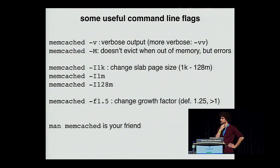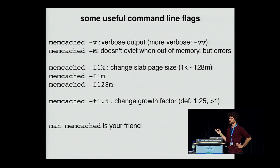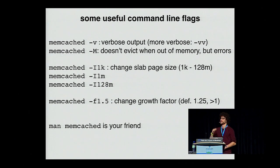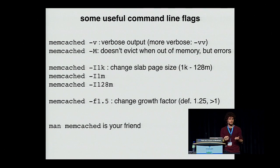A few useful command-line flags for memcached: you can change the verbosity of the output to see slab classes. You can use `-M` so that it does not evict when out of memory but errors out instead — useful in some cases. You can change the slab page size from 1 kilobyte to 128 megabytes; it's useful to know what size data you're storing so you're not wasting chunks. You can also change the growth factor depending on your use case. The man page for memcached is actually pretty good — `man memcached` is your friend.